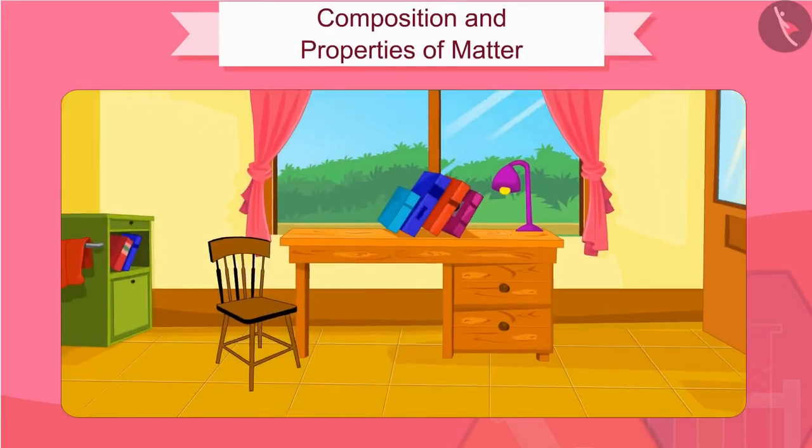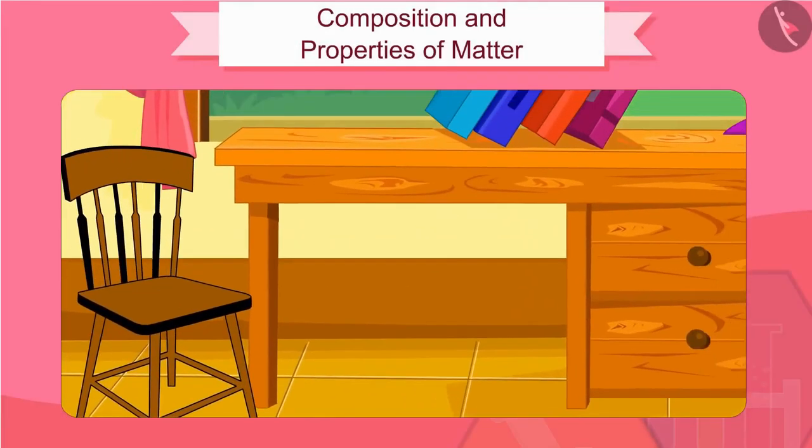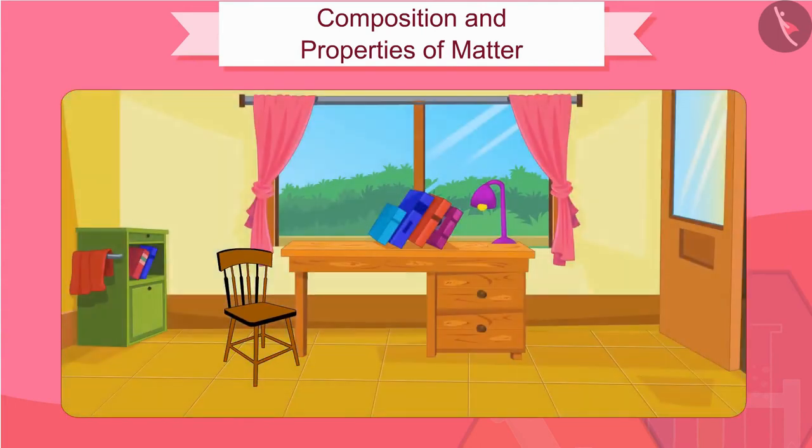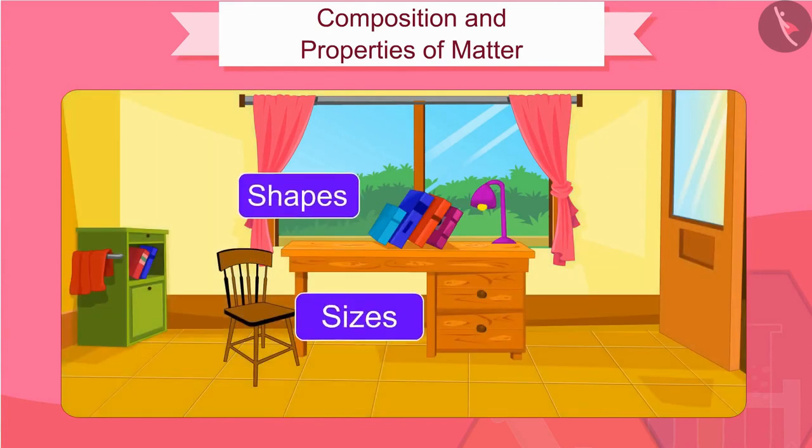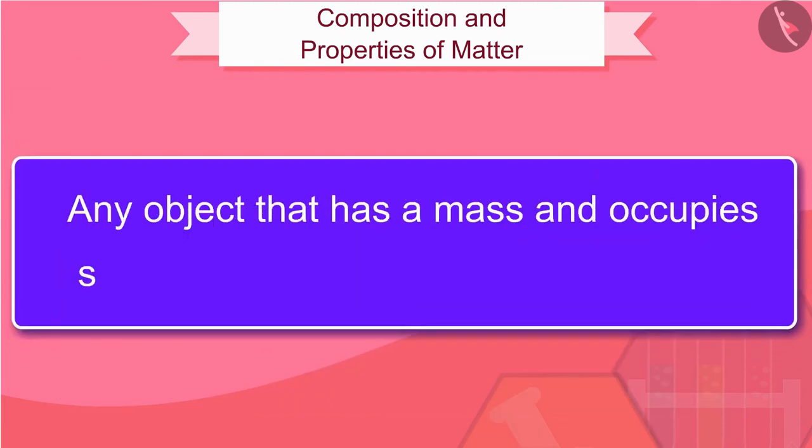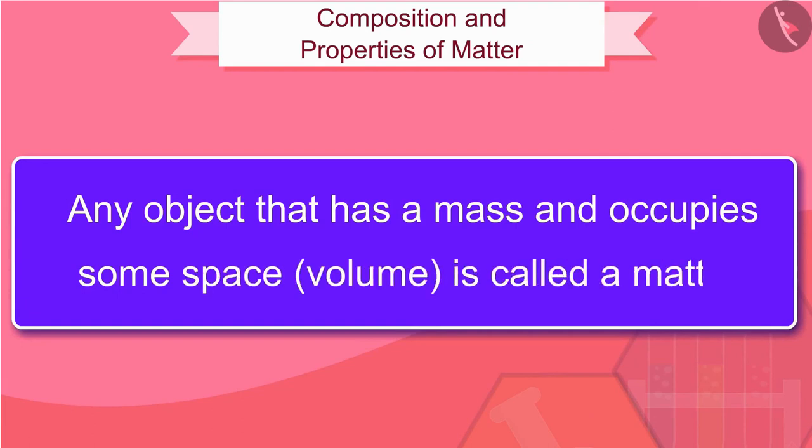As we look at our surroundings, what do you see? Yes, we see a large variety of things around us which have different shapes, sizes and textures. Any object that has a mass and occupies some space, volume, is called a matter.